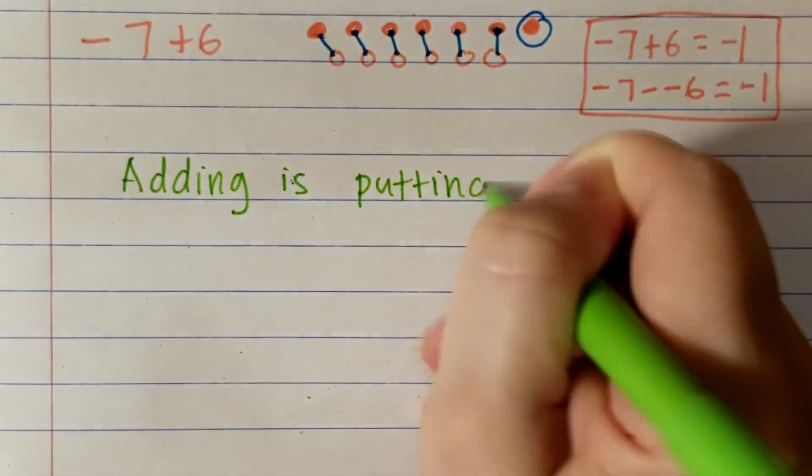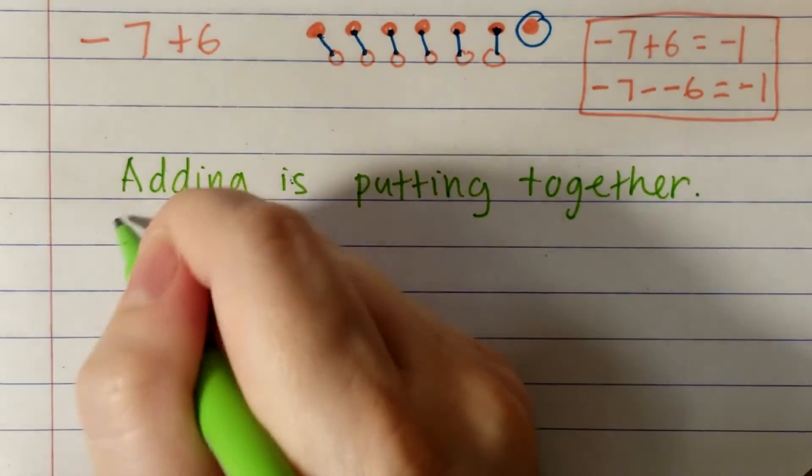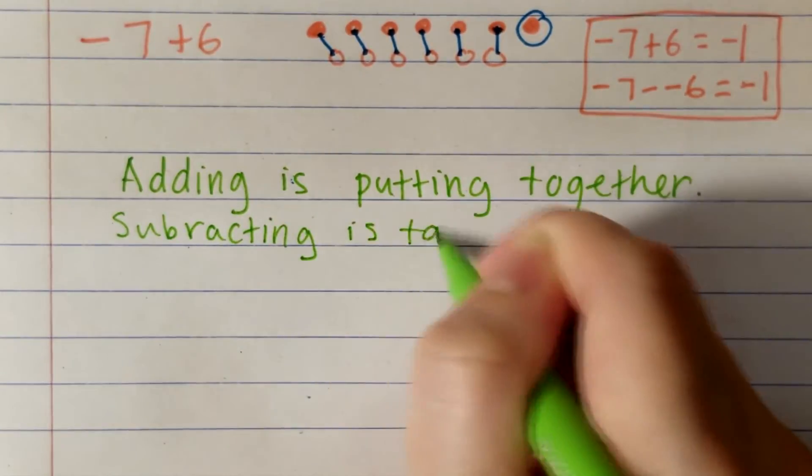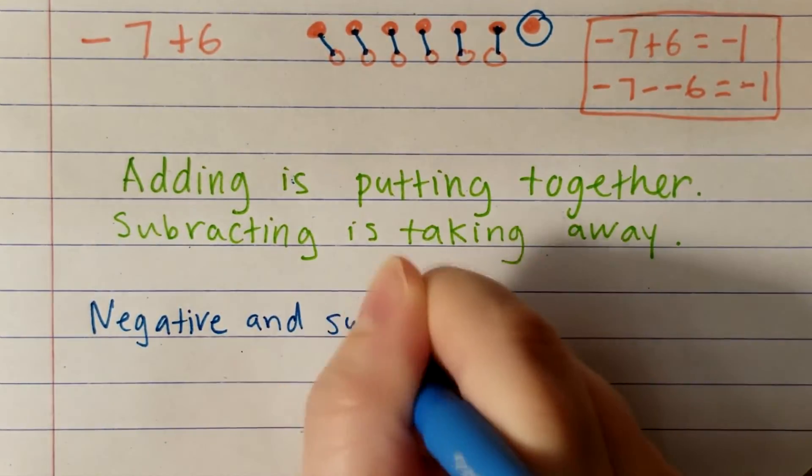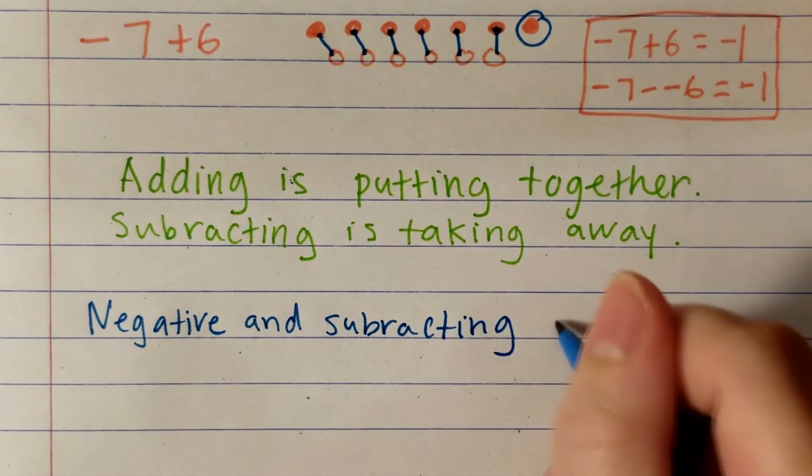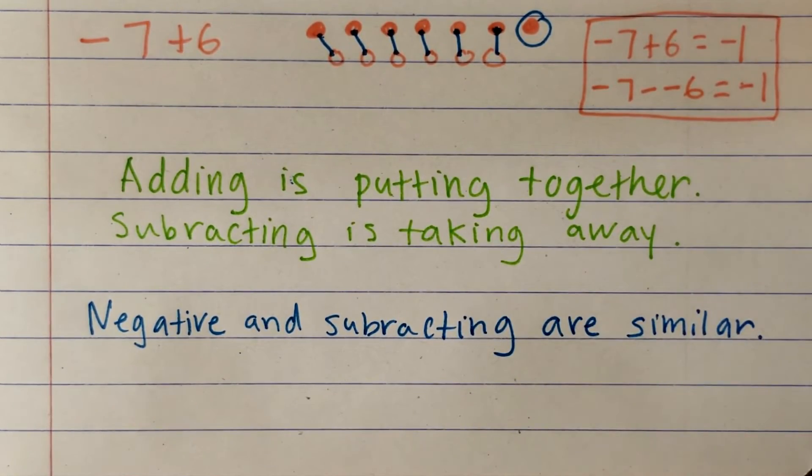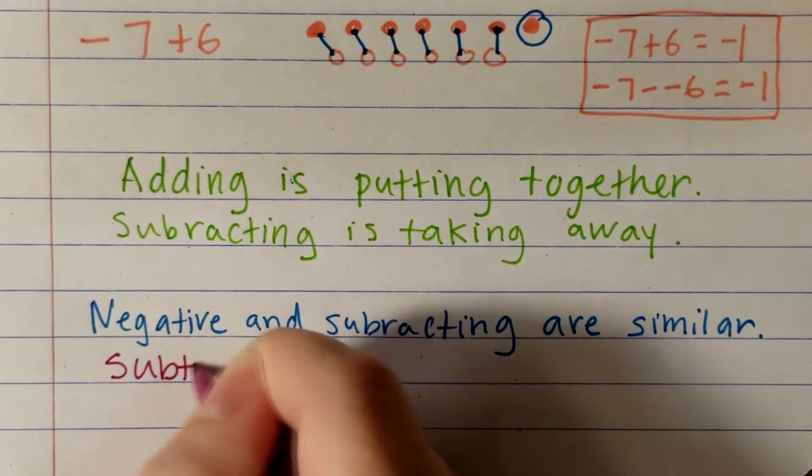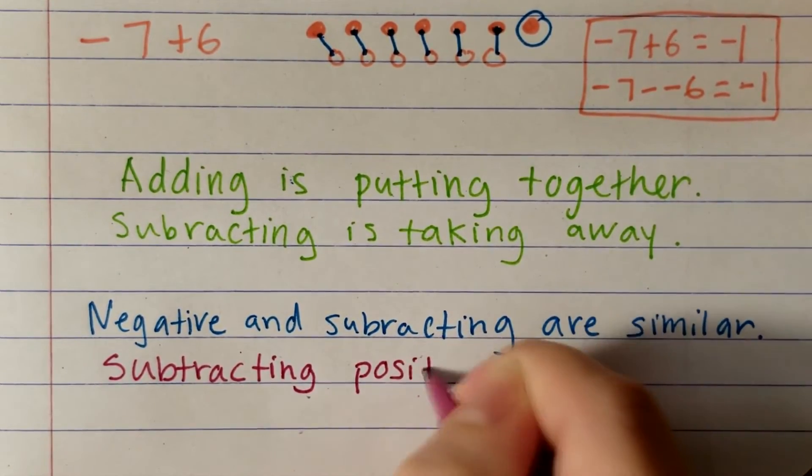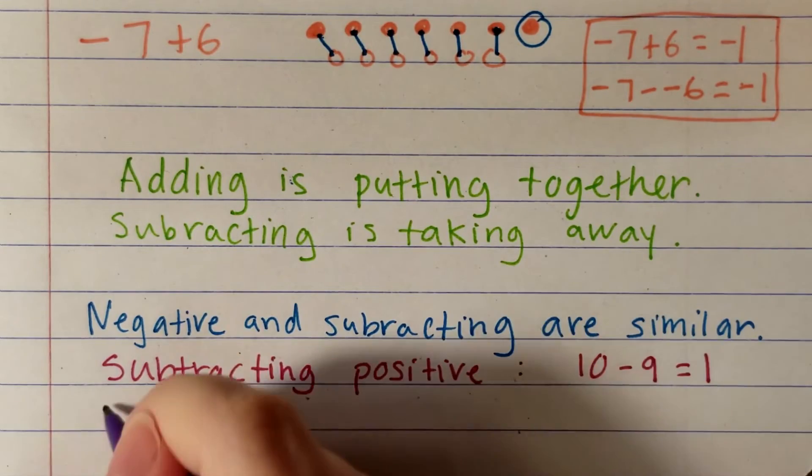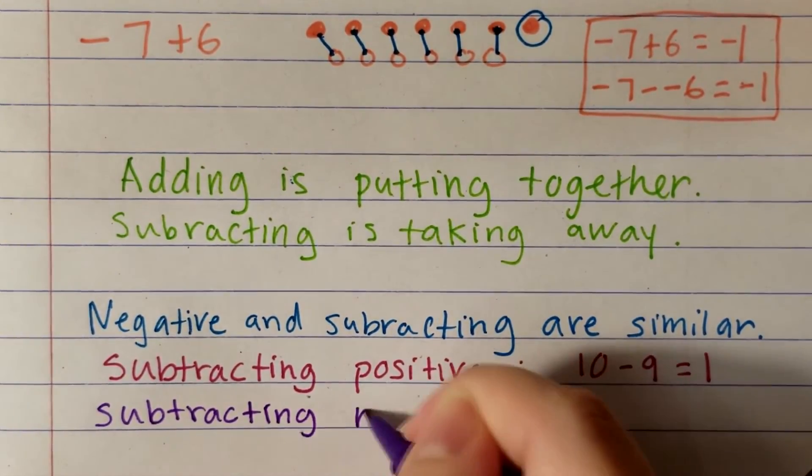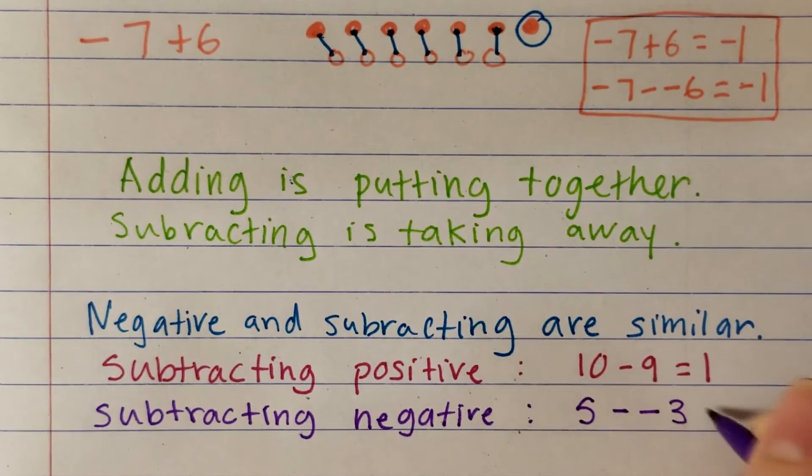Here's a quick rundown. When adding and subtracting integers, you can use counters to model the problem using zero pairs. Zero pairs are a pair of numbers that together equals zero. Adding is putting together and subtracting is taking away. Pay close attention to the signs. The negative and subtraction signs both mean you are losing it or owing it. Many students get confused between the difference between taking away positives and taking away negatives.